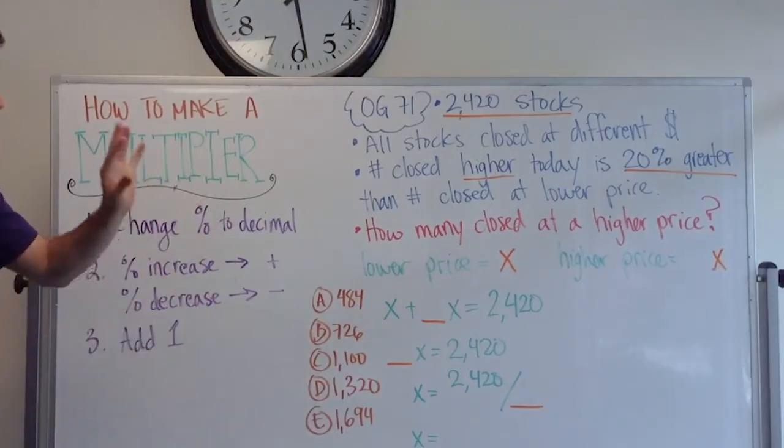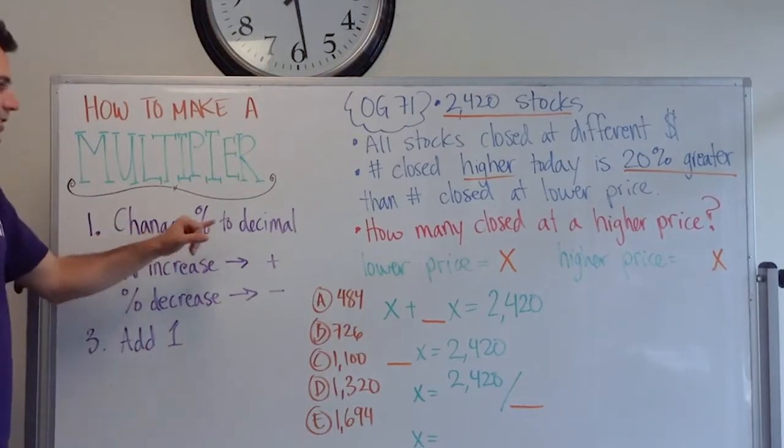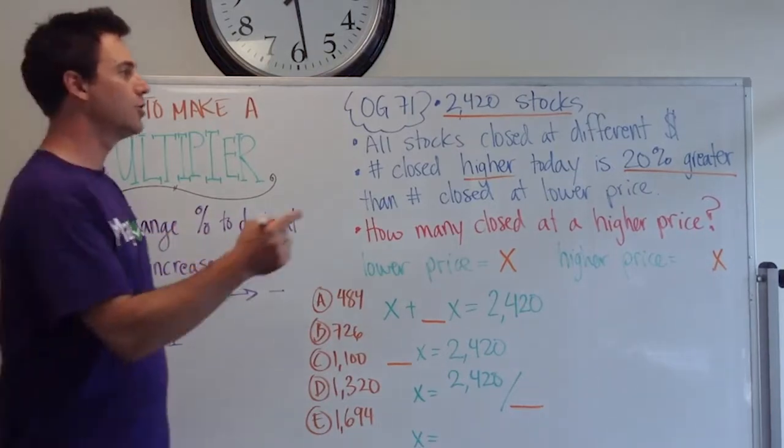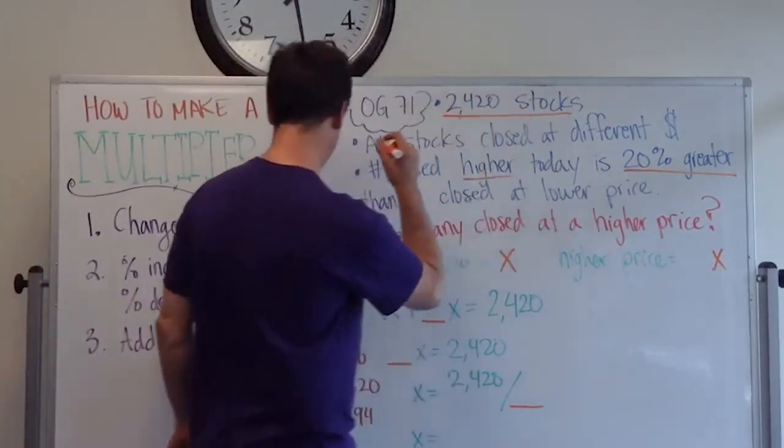So what do we do? We change our percent to a decimal. So we have 20% greater. That means 20%. How do we change that into a decimal? We're going to move our decimal point and drop the percent sign. It becomes 0.20. Okay, we got a decimal.